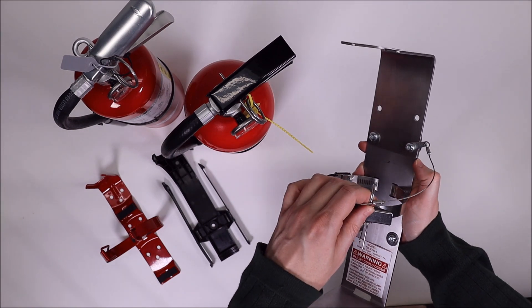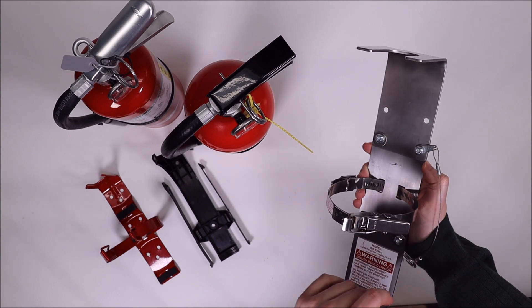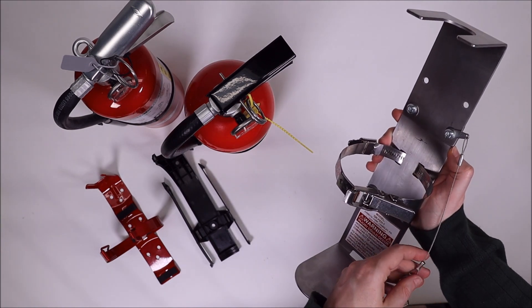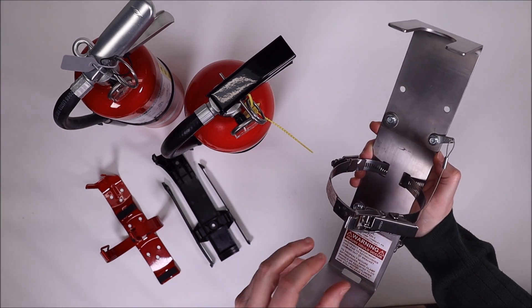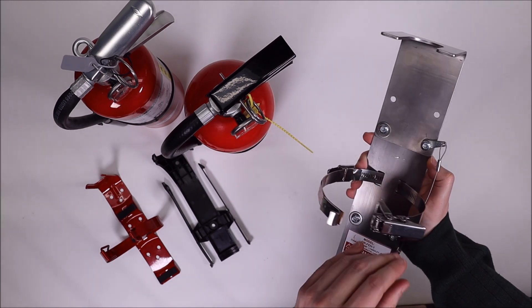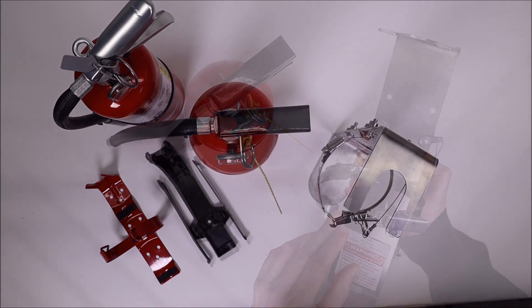And when you need the extinguisher, you simply pull the pin. A lanyard lets it just dangle without losing it. And a quick-release latch lets you access the extinguisher in a hurry.